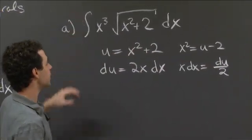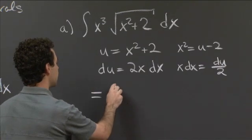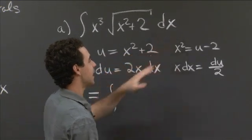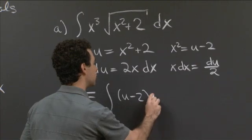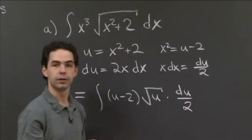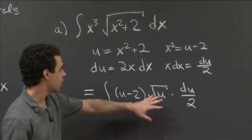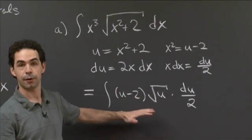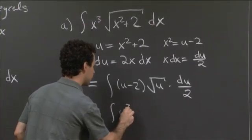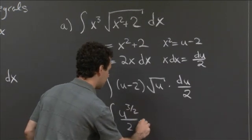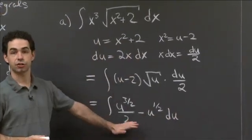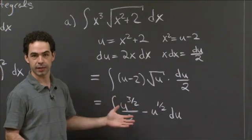When we make these substitutions, what we get is that this integral equals the integral of x squared times the square root of x squared plus 2 times x dx — that's u minus 2 times the square root of u times du over 2. Having made this substitution, with a little rearrangement this is just a sum of powers of u. We can rewrite this as the integral of u to the 3/2 over 2 minus u to the 1/2 du. So it turns out we don't need integration by parts or a trig substitution.